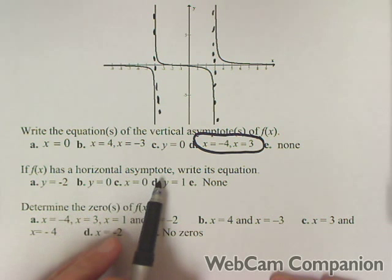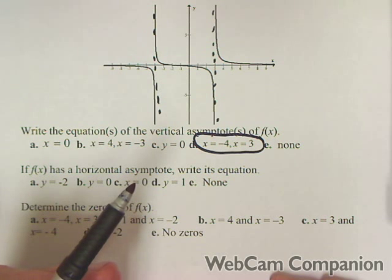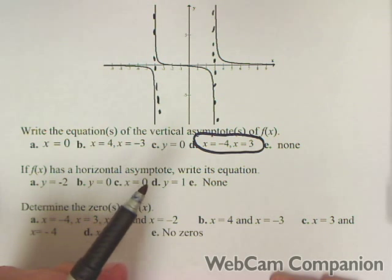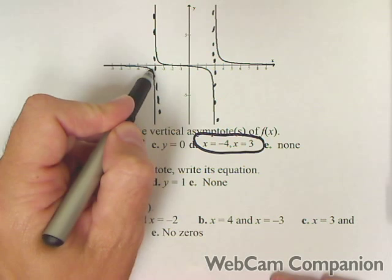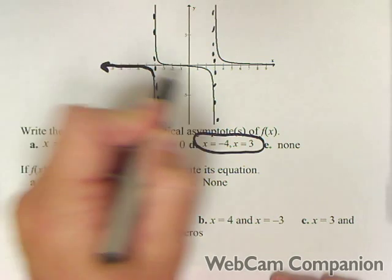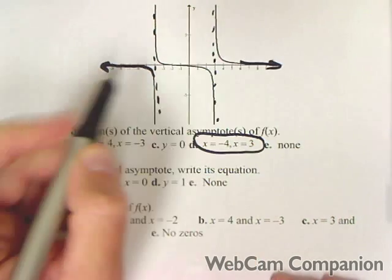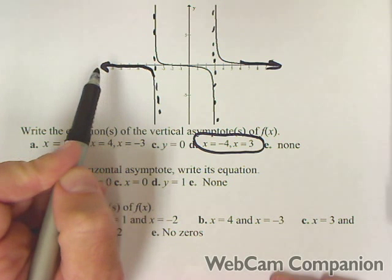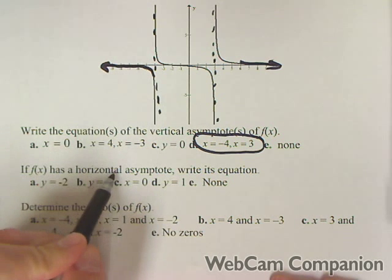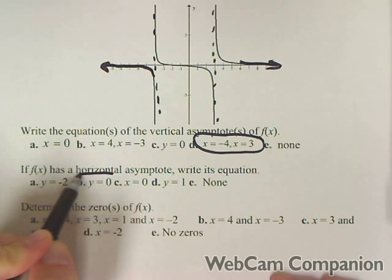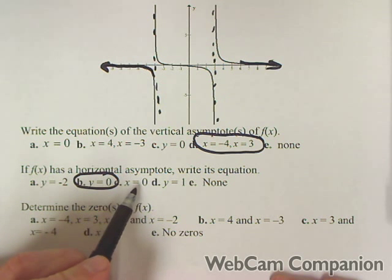If f of x has a horizontal asymptote, write its equation. There's no guarantee a rational function will have a horizontal asymptote. A horizontal asymptote is what the function approaches as y goes to negative infinity and positive infinity. We can see this graph levels out at zero, so because it's horizontal, the equation is y equals zero, not x equals zero.